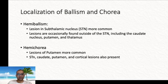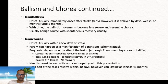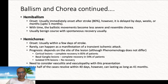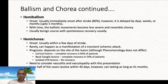Localization for hemiballism is usually the subthalamic nucleus, however other nuclei can be affected as well. For hemicorea, it is more commonly the putamen. Regarding natural history, hemiballism onset is usually acute — 80% of the time it happens immediately. It can also be delayed from days to weeks up to five months. With time, it usually slows down, evolves into chorea, and recovers spontaneously.